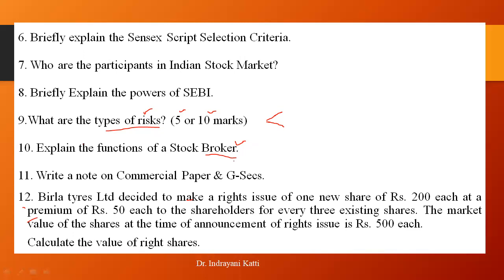Then write a note on commercial paper and government securities. Commercial paper involves unsecured instruments issued by highly credit-rated companies. Government securities — G-Secs — are issued by the government. If you want to write a note on commercial paper, cover it for 2.5 marks.